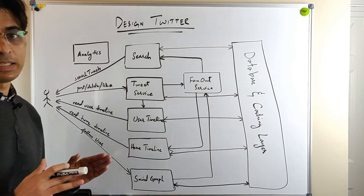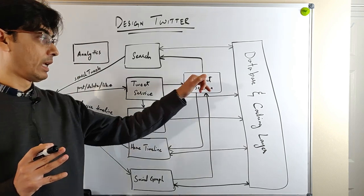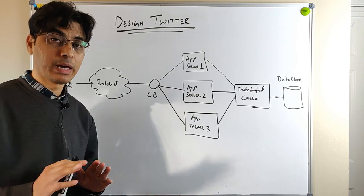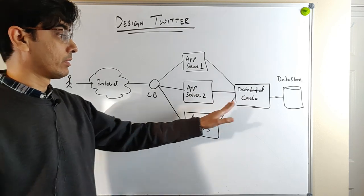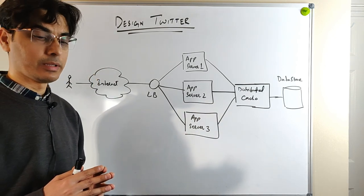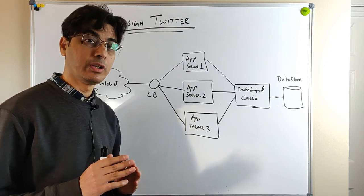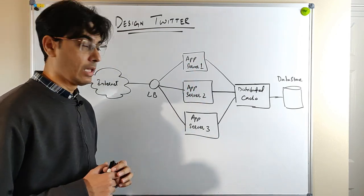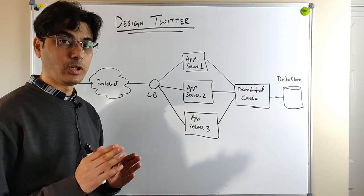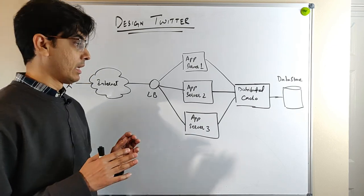Now we will design the individual services. The tweet service is responsible for receiving user tweets and forwarding them to the user timeline service and the fanout service. It also stores user and tweet information into the data store. The tweet service comprises at least three application servers along with a distributed cache and a data store, using the cache in a write-through manner — always updating both the data store and cache at the same time.